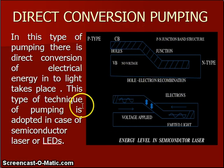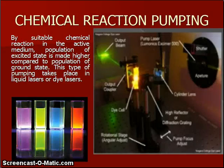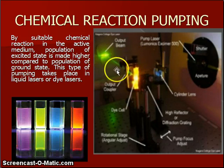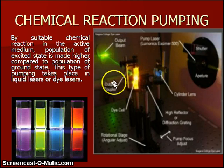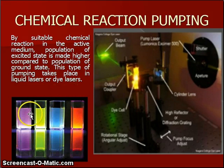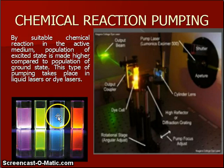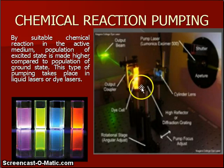The next type is chemical reaction pumping. Chemical reaction pumping is suitable for liquid lasers or dye lasers. Here is a diagram for a dye laser showing different dyes of different colors. By a suitable chemical reaction in the active medium, the population of the excited state is made higher as compared to the population in the ground state. This type of pumping takes place in liquid lasers or dye lasers, and is called chemical reaction pumping.